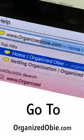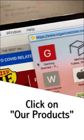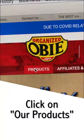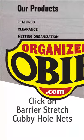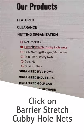Go to OrganizedObee.com. Under the yellow OB icon, click on Our Products. Now, down the left side, click on Netting Organization. Under that, click on Barrier Stretch Cubby Hole Nets.